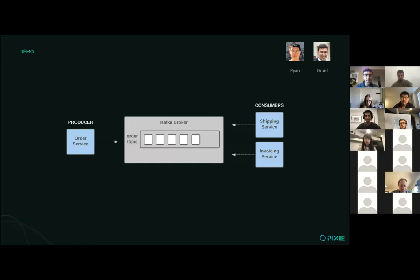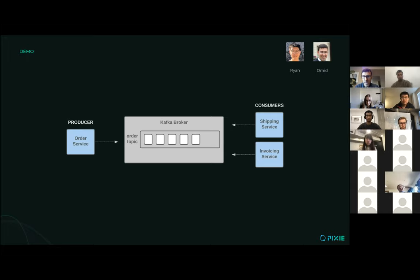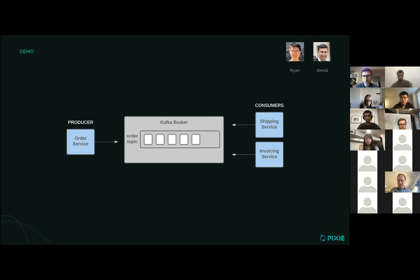We're going to focus on Kafka here and use a demo. We have a simple Kafka broker in the middle — that's our message bus. This is an e-commerce website where you can place orders. There's an order service — our frontend — that takes orders from the website. When an order is made, it produces something to the Kafka broker into the order topic. Then we have two consumers on the right-hand side: the shipping service and the invoicing service. These two services are constantly polling to see if there are any new orders in Kafka. When they get something new, the shipping service initiates the shipping process, and the invoicing service takes the order information and generates an invoice.